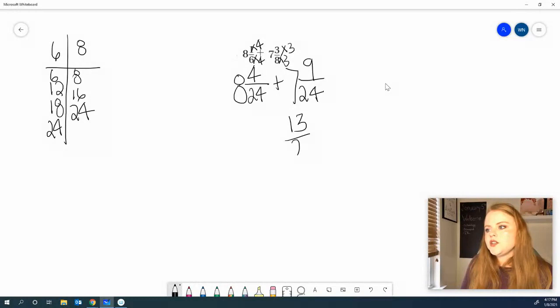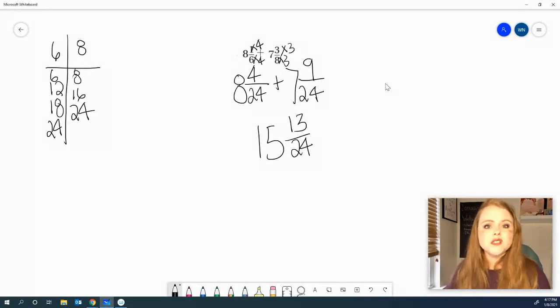We have 13/24. 8 plus 7 is 15. 15 and 13/24 is what you should have gotten. 13/24 cannot be simplified. So, that's your correct answer.